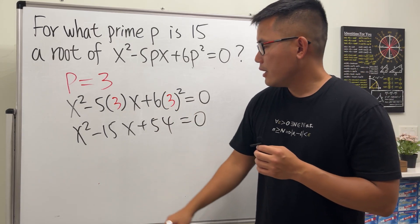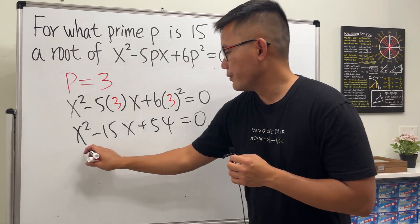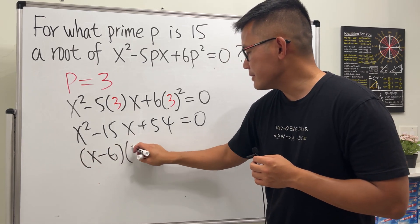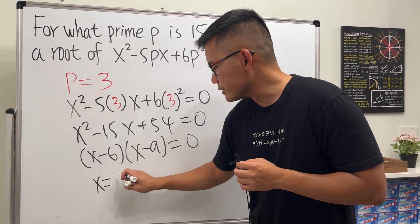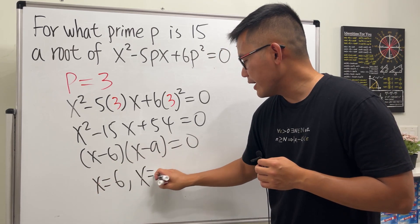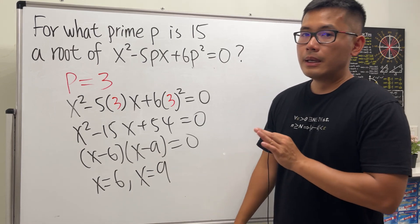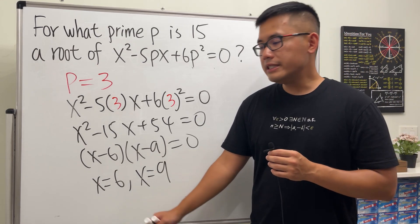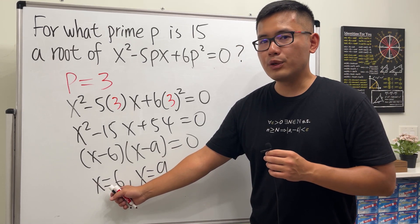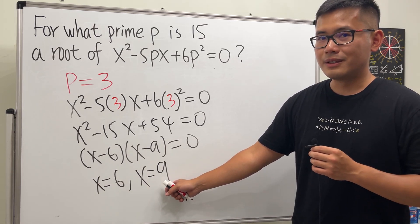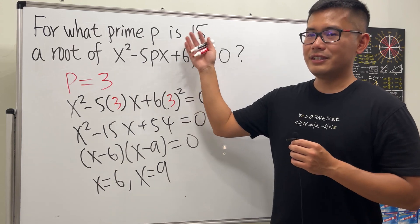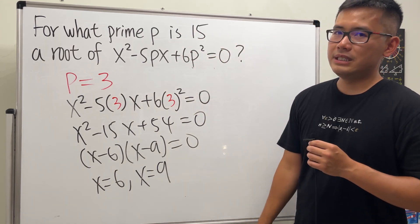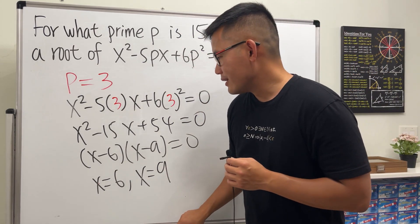We can actually factor this nicely. We get (x - 6)(x - 9) = 0. From here it means x = 6 and this tells us x = 9. But you see that neither x = 6 nor x = 9 equals 15, so all together we know that 3 is not the answer for this because we're looking for x being equal to 15.